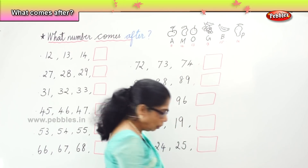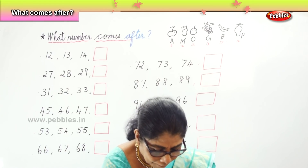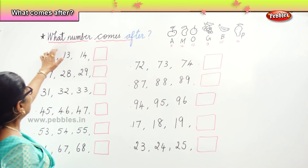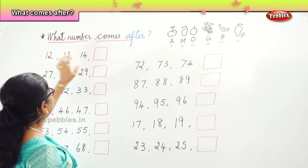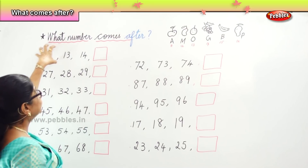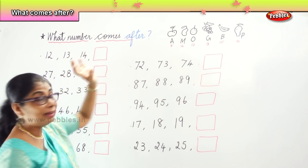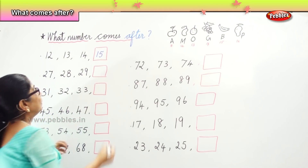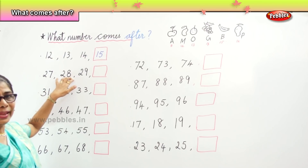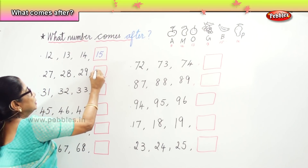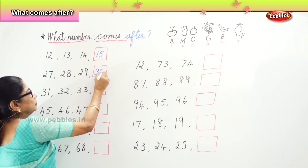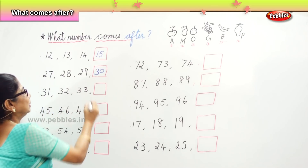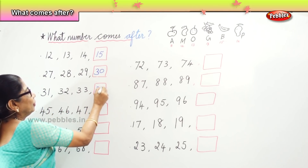Now we are going to fill in all these boxes with the number that comes after. What number comes after? Twelve, thirteen, fourteen — what is the number? Fifteen. Very good. What number comes after? Twenty-seven, twenty-eight, twenty-nine — thirty. Very good. What number comes after? Thirty-one, thirty-two, thirty-three — what number? Thirty-four. Excellent.